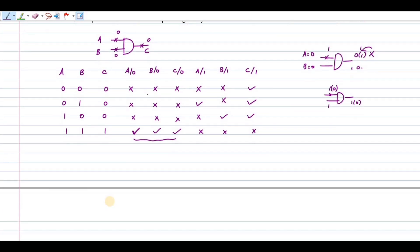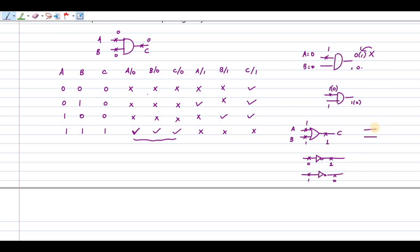Similarly, you can draw it for the OR gate. For the OR gate, you draw this table and you can identify the equivalence. Similarly, for the NOT gate: for stuck at 0, the equivalence is stuck at 1; for stuck at 1, the equivalence is stuck at 0. For NOT gate, if it is stuck at 1, the answer is 0. For AND gate, if it is 0, equivalence is 1.